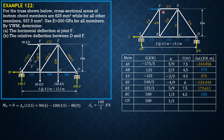Therefore, the horizontal deflection at F equals (1000 squared / 200,000) times [sum of blue entries (675) divided by area 625 plus sum of orange entries (875.555) divided by area 937.5]. The horizontal deflection at F is 10.07 mm, in the direction of the unit virtual load — rightward.